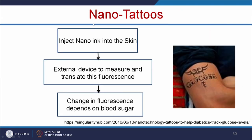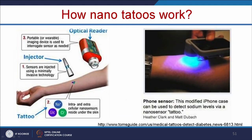Another innovation is nano tattoos. We can inject nano ink into the skin, and an external device measures and translates the fluorescence — the change in fluorescence depends on the blood sugar level. The sensor is injected using minimally invasive technology; once injected, the tattoos can measure sugar level as well as sodium level in your blood. A portable optical reader — for example, a modified iPhone case — can be used to detect sodium levels through these nanosensor tattoos.